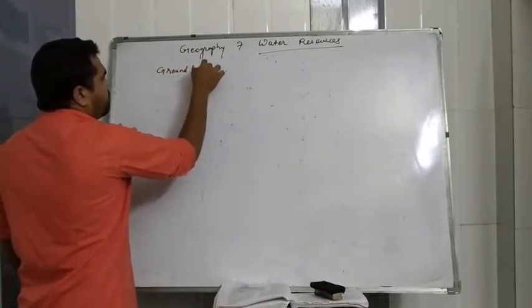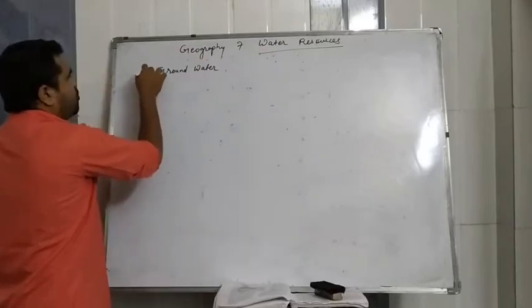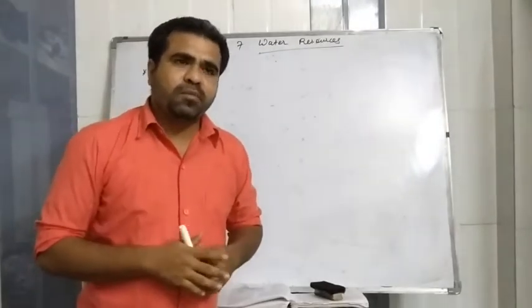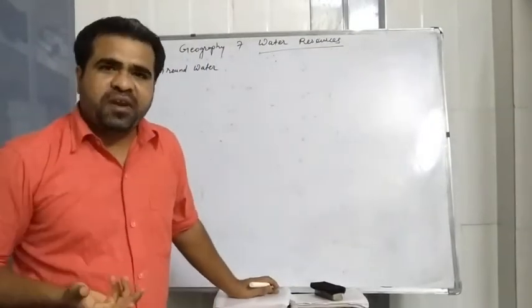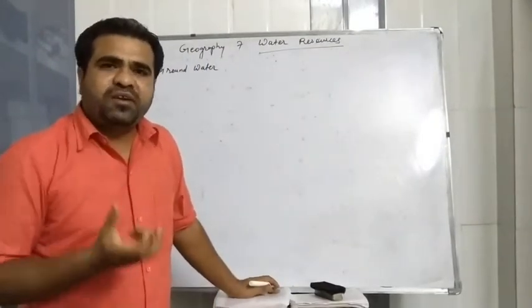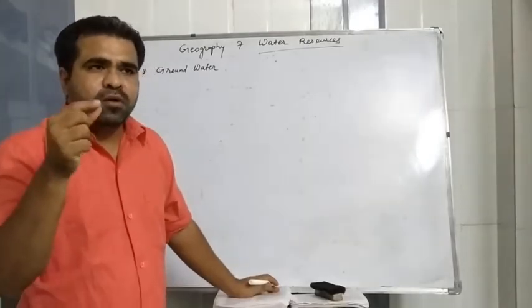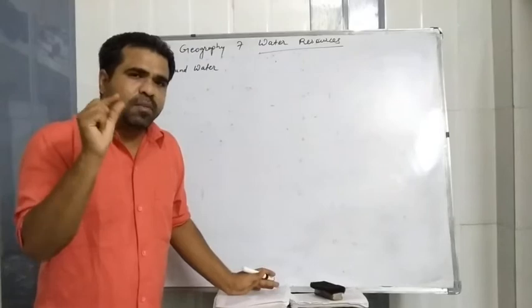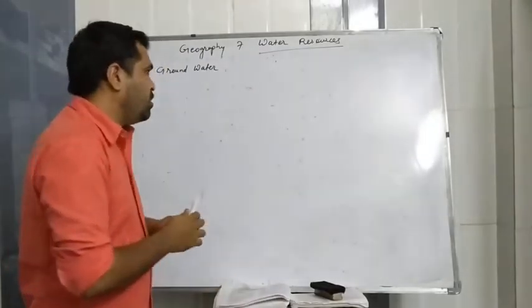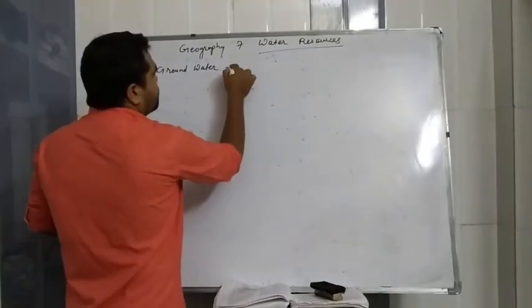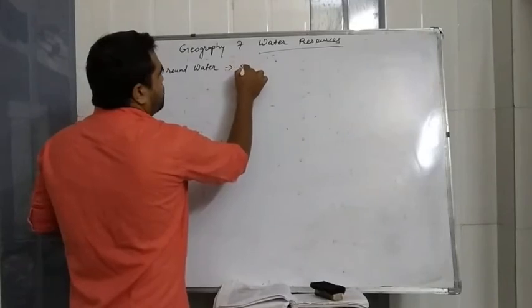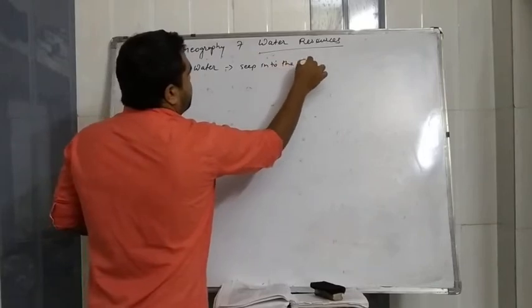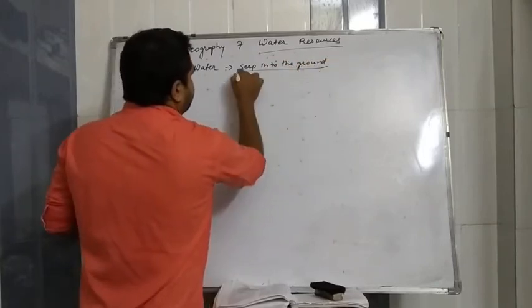If you want to see ground water, the rain pattern is very important. If there is a fast rain, the rain will not seep into the ground. If there is a little bit of rain, the rain will seep into the ground and it will seep into the ground water.